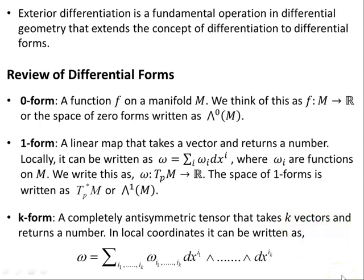Exterior differentiation is a fundamental operation in differential geometry and extends the concept of differentiation to differential forms. Let's briefly review differential forms. A zero form is a function on a manifold M — we think of this as F mapping the manifold to the reals. The space of zero forms is written as capital lambda zero of the manifold M.